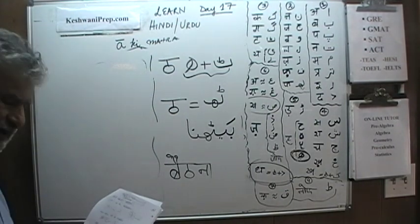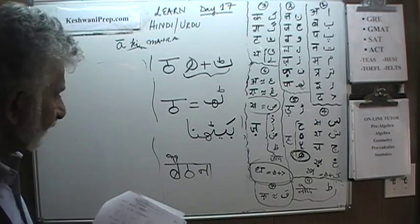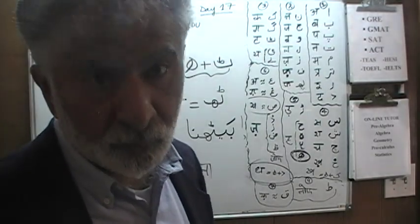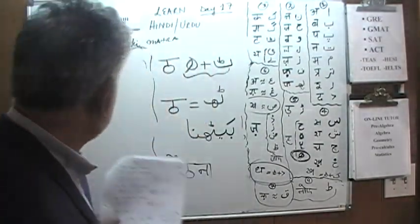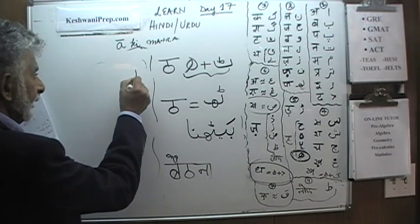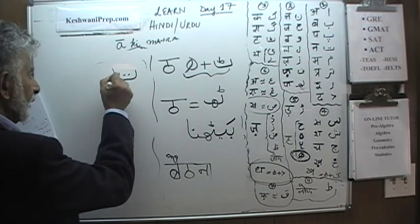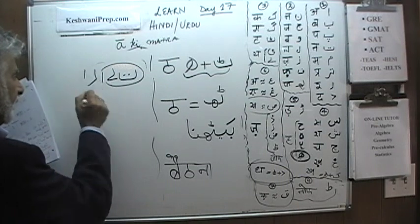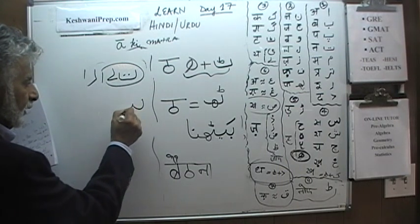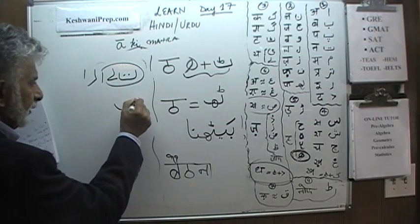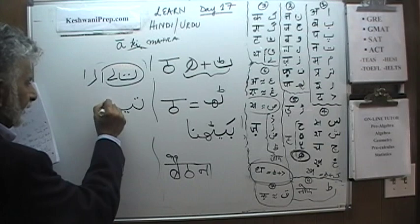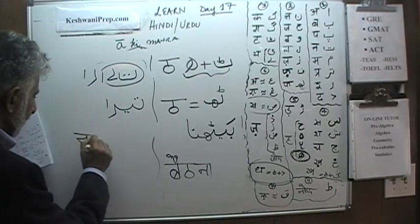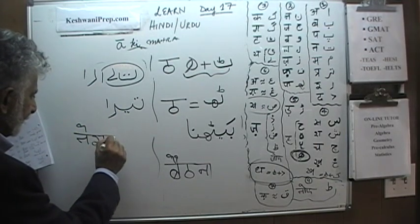Let's do one more similar to Mera. Instead of 'Mera' (mine), let's write 'Tera' (yours). Te, Badi Ye, then Ra — 'Tera.' Te, Badi Ye, Ra — 'Tera.'